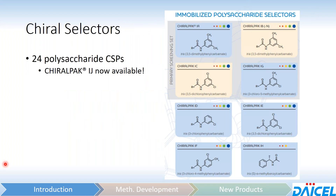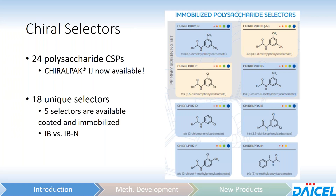In total, we'll be looking at 24 polysaccharide chiral stationary phases, with ChiroPak IJ being the newest one available. This is a snapshot of what that looks like for the immobilized columns from our chiral selector poster. In total there are 18 unique selectors, because several are shared between coated and immobilized versions, and in the case of IB and IBN, it's actually the same selector between the two versions.